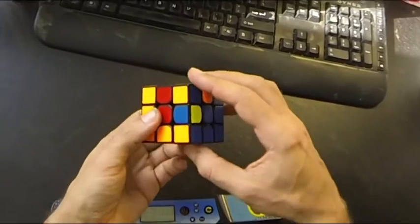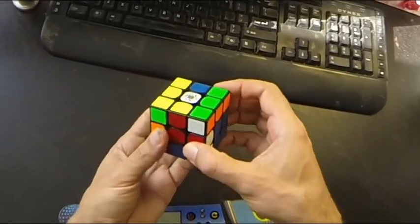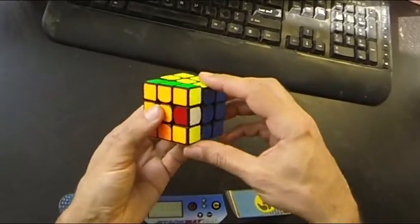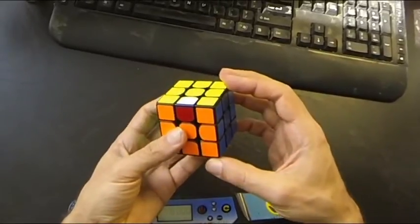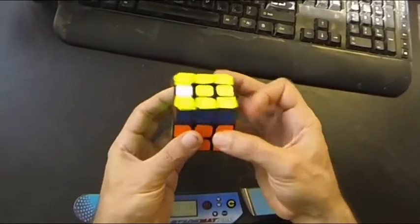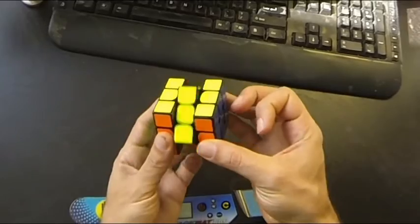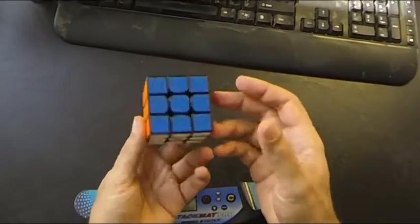I go M F U prime M2 U F prime, and then all I have left is to permute the edges. You can see that this is solved, so it's just U2 M U2 M prime, and that's it, 28 moves.